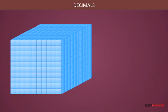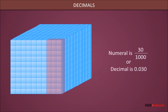Consider another cube. The shaded part has 3 sticks containing 10 boxes each. So, it represents 30 thousandth part. In numeral form, we write 30 by 1000, and in decimal form, it is 0.030.